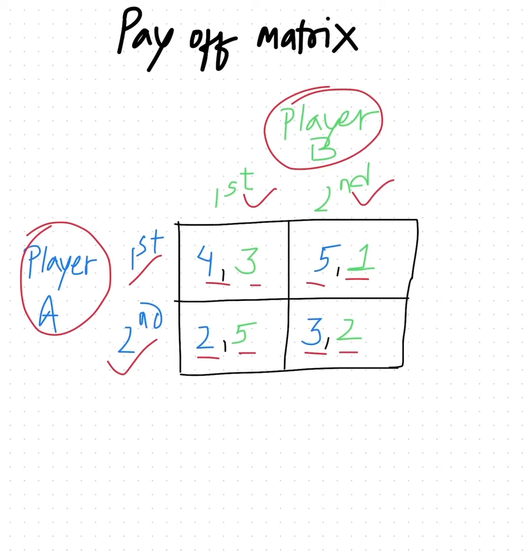Let's see what pair of strategies gives us a particular pair of payoffs. Starting with 4, 3, we look at the corresponding strategy for this payoff. The corresponding strategy for 4, 3 is first for Player A and first for Player B. So when both players select the first strategy, the result is 4, 3.